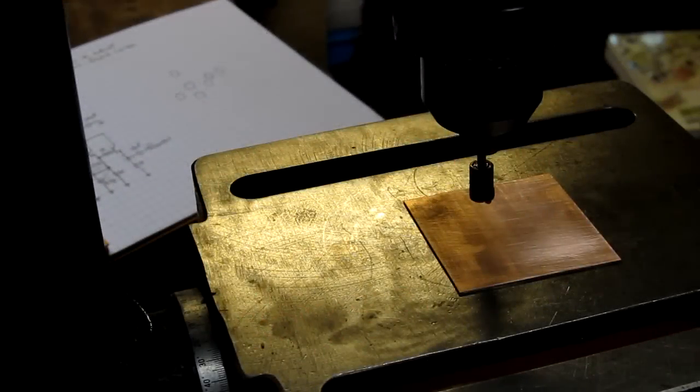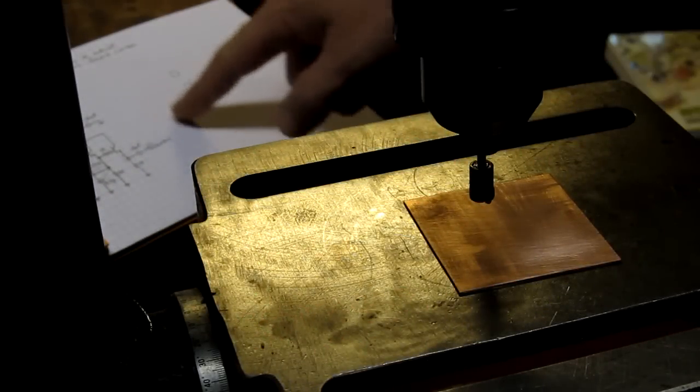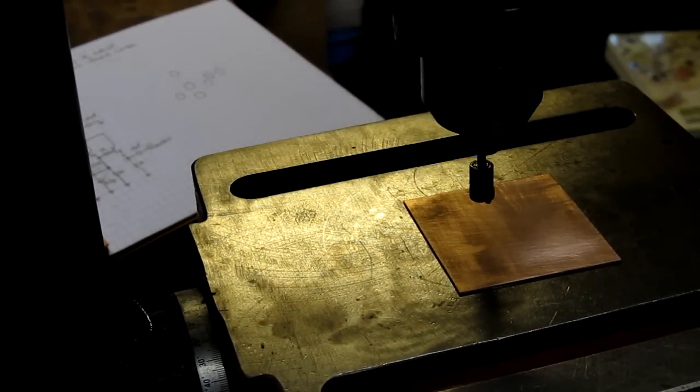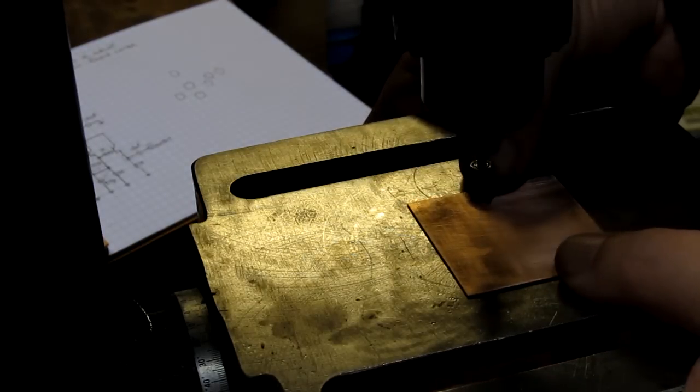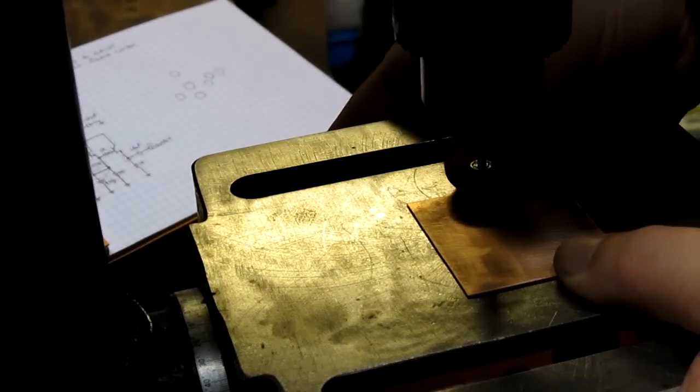We're at the drill press here. I've got my reference diagram over here to see where the islands want to be, and the circuit board underneath the cutter here. You have to be a little careful with these island cutters. They are asymmetric, so they're going to want to tend to grab the copper.